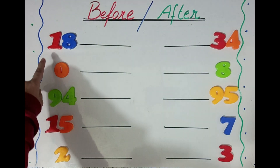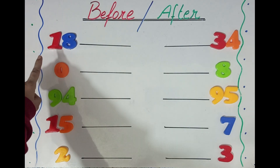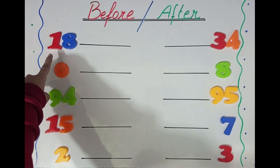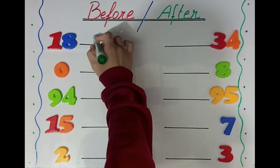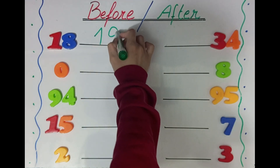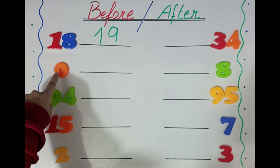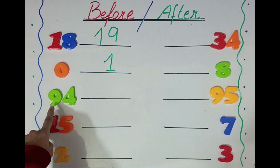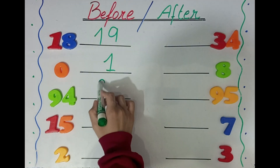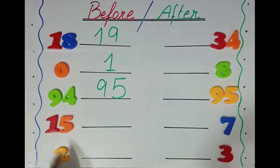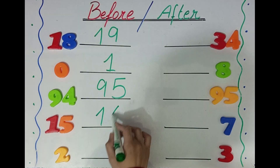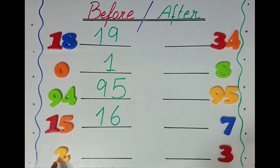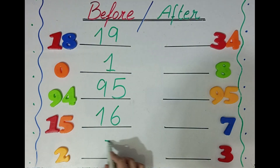Here the first question is 18. What comes after 18? 19. What comes after 0? 1. What comes after 94? 95. What comes after 15? 16. What comes after 2? 3.